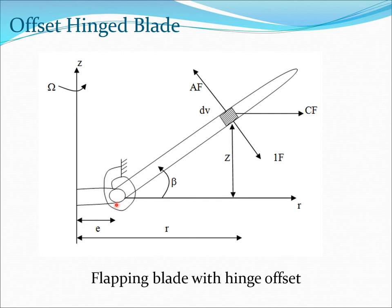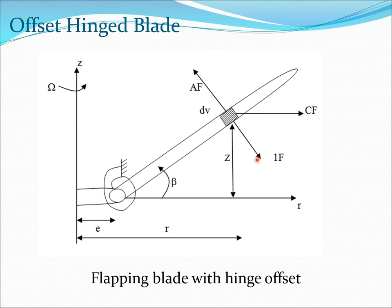In the diagram you can see the hinge is located at a distance e from the root, and the rotation takes place around this root. The blade is going through a flapping motion given by beta. r is the distance to a particular mass element m·dr. This mass has three forces acting on it: the centrifugal force, the aerodynamic force, and the inertia force.